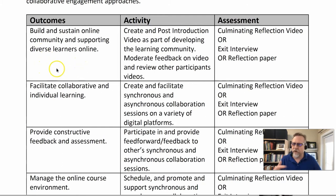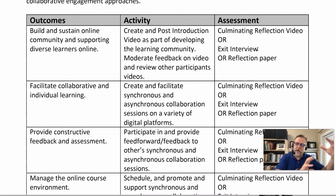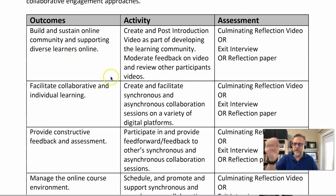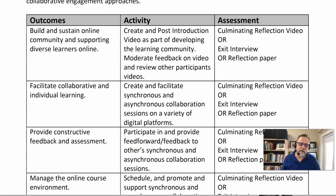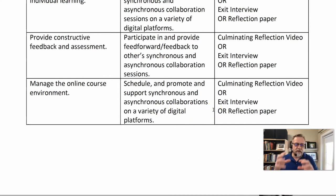I like to have one outcome per module as part of the design process. The first outcome: build and sustain community and supporting diverse online learners — the creation and posting of an introduction video and then monitoring that. The assessment happens at the end and it's the same assessment all the way through. With outcomes-based instruction you can have assessment in each module, but in this case we had an assessment at the end. If a person could do all the particular pieces — building the introduction video, creating a synchronous collaboration session, monitoring and managing, establishing the asynchronous session, and monitoring and supporting it — that would show whether or not the learner accomplished the outcome.